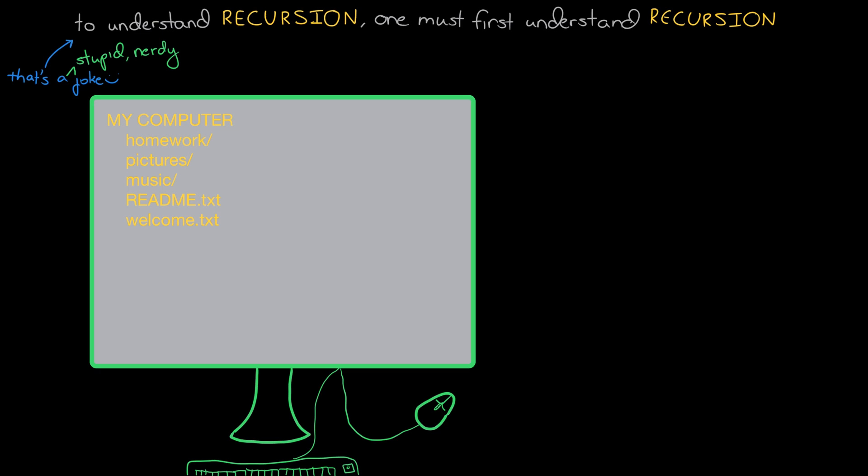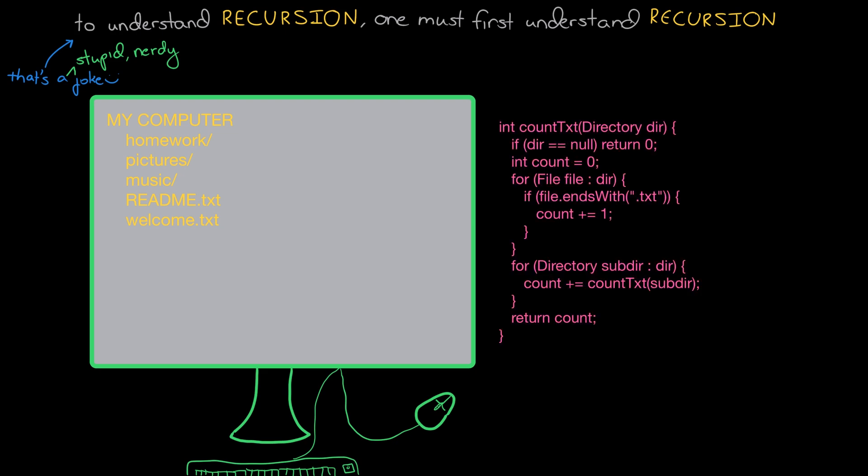So when we do it recursively what we do is we say okay we might count how many files are in our root directory, but then we go and add up how many are in each folder and we go and ask them in the very same process, hey how many .txt files do you have? And they then know to go out and ask their subfolders and so on and that's what recursion is.